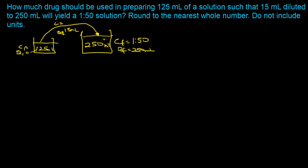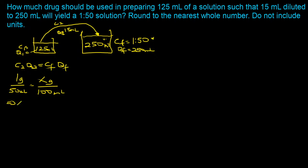We can state that c2 × q2 = c_final × q_final. To make computation easier, we convert the ratio strength 1:250 to percentage strength. If you have 1 gram of drug in 250 mL, percentage strength is x grams per 100 mL, so x = (1 × 100) / 250 = 0.4%. Wait — let me recalculate. The ratio given leads to percentage via cross-multiplication.